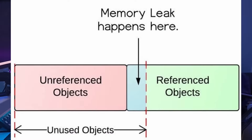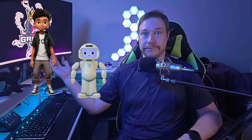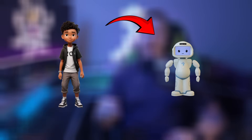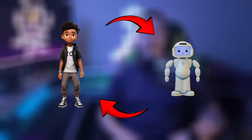Now for the main event: the memory leak. The most common type of leak in Unreal Engine is the dreaded circular reference. Imagine two characters in your game — let's call them Player and Robot. Player has an actor object reference variable pointing to Robot, and Robot has an actor object reference variable pointing back to Player. Now they're holding hands in a perfect circle. The game's running, and suddenly they're no longer needed. The player disconnects and the robot's no longer in the level.